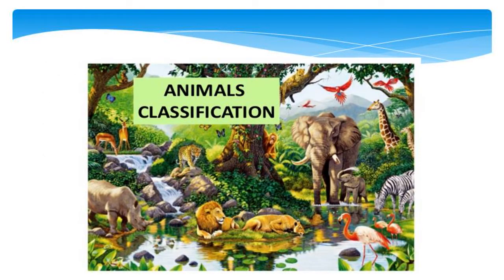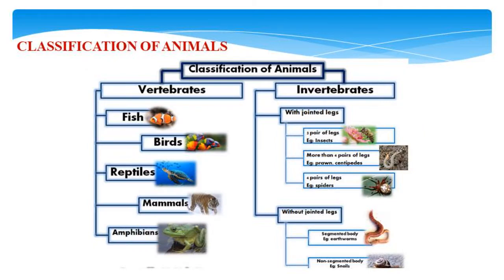Next, we have animal classification. The classification of animals is divided into two broad categories: vertebrates and invertebrates. Vertebrates are animals distinguished by the possession of a backbone or spinal column, which includes fish, birds, reptiles, mammals, and amphibians. Invertebrates don't have a backbone; they are categorized as with joint legs — examples include insects, prawn, and spiders — or without joint legs — examples include earthworms and snails.